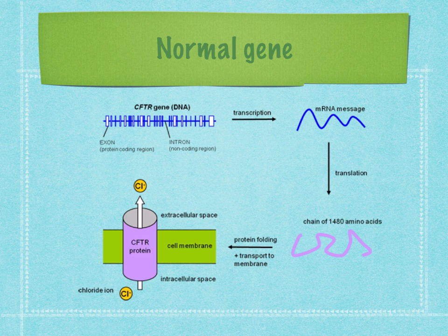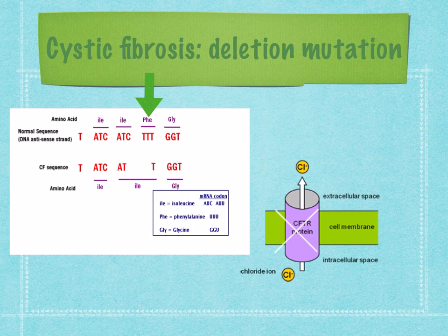This allows water to follow by osmosis, keeping epithelial cells moist. Cystic fibrosis is caused by a mutant recessive allele where three DNA bases are missing — an example of a deletion mutation that results in a frame shift. This means that the amino acid phenylalanine is left out and the protein is either not made or cannot perform its function of transporting chloride ions across the epithelial membranes.